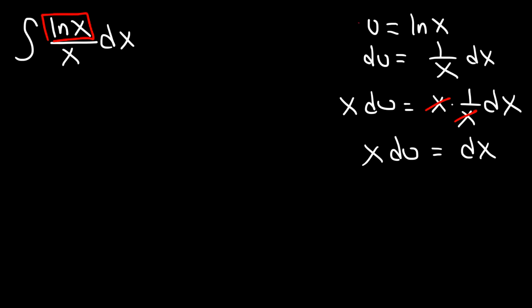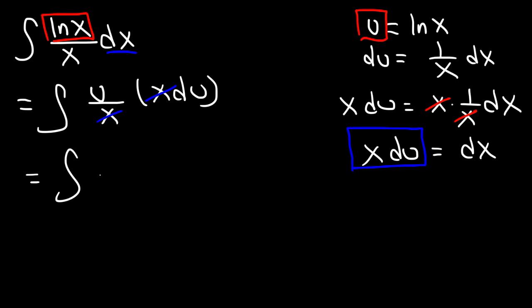Now let's replace ln(x) with u and let's replace dx with x du. So this is going to give us the integral of u divided by x times x du, and we can see that x is going to cancel, and this will just give us the integral of u to the first power du.